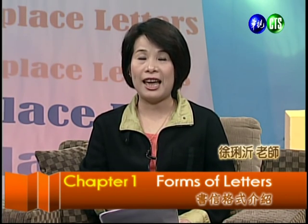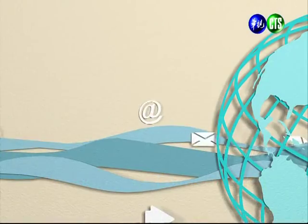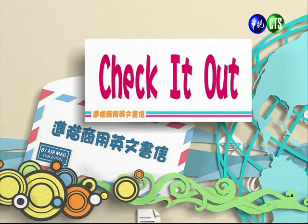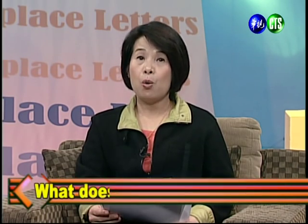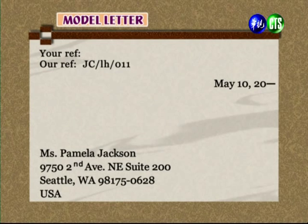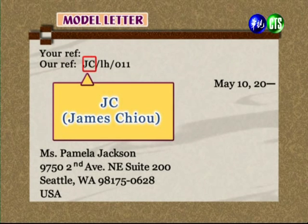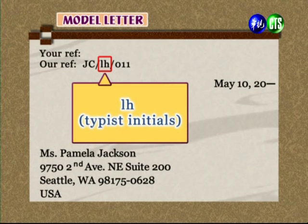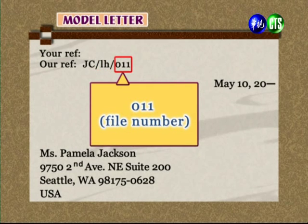Now let's take a closer look and check it out — there are more key points to learn. What does the reference tell you? In this letter, the reference 'JC' indicates who sent the letter — James Cho. 'LH' following it is the typist's initials. The third part is the file reference number for archiving.